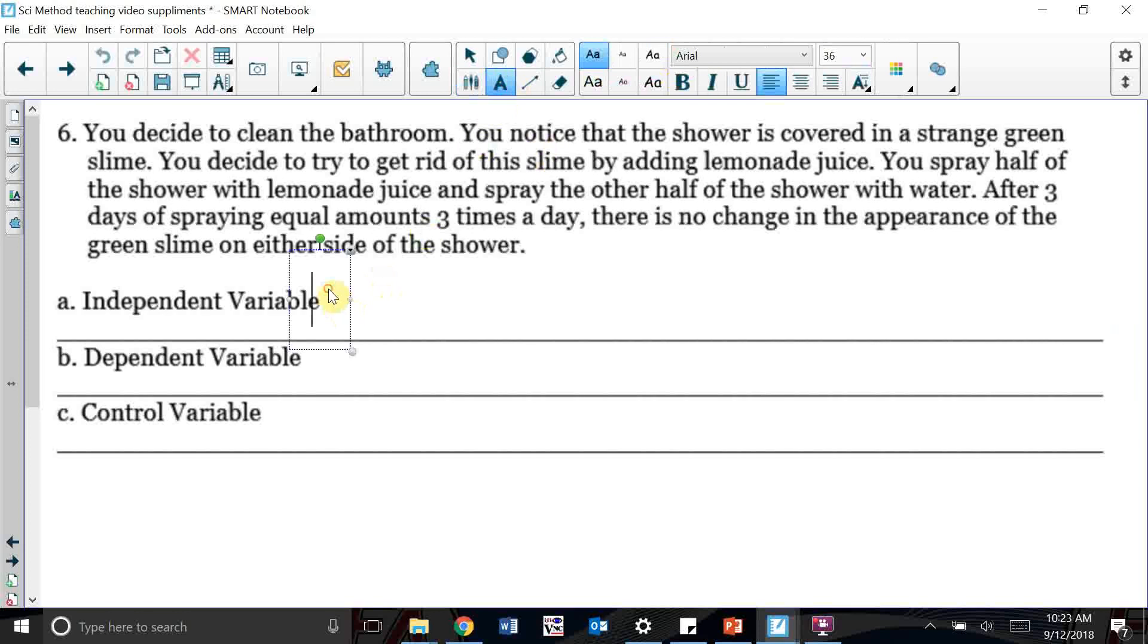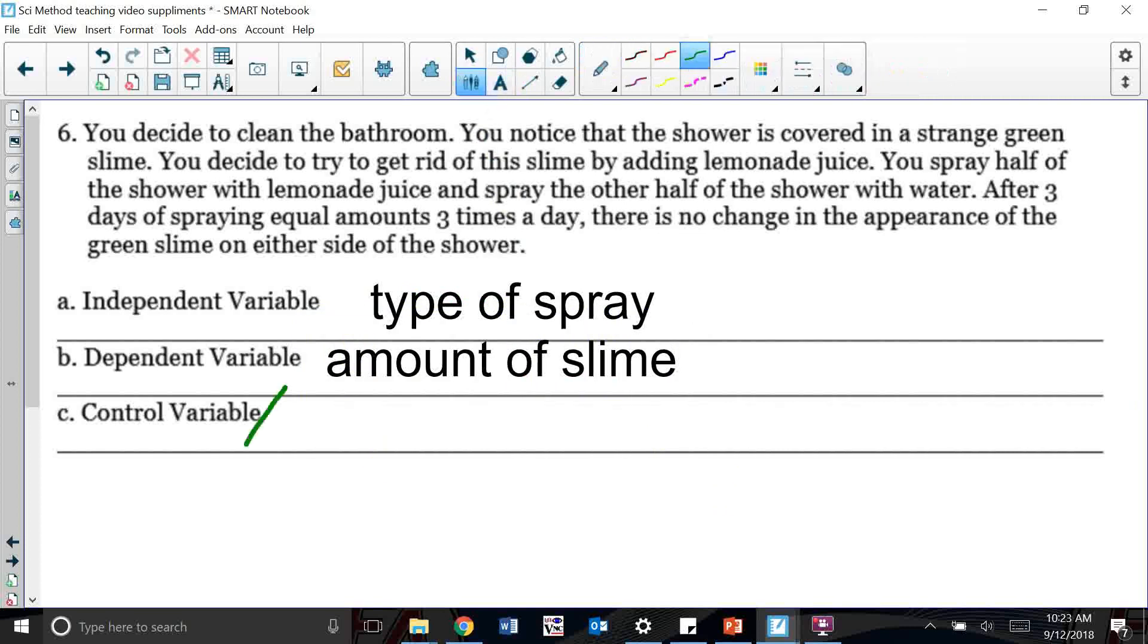Again, I'm just going to go ahead and do our variables here. What's changing is the type of spray. I got to change whether it's water or it's lemonade. What am I measuring, my dependent variable? Amount of slime. And here we go, here's our control variable or our constants.